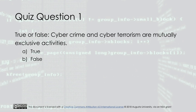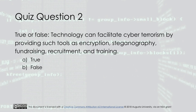Quiz Question One — True or False: Cyber crime and cyber terrorism are mutually exclusive activities. The answer is B — False. Quiz Question Two — True or False: Technology can facilitate cyber terrorism by providing such tools as encryption, steganography, fundraising, recruitment, and training. The answer is A — True.